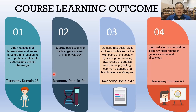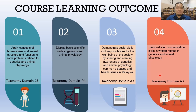The third course learning outcome is to demonstrate social skills and responsibility for the well-being of society by sharing and creating awareness of genetic and animal physiology common diseases and health issues in Malaysia. This is in taxonomy domain A3. The fourth course learning outcome is to demonstrate communication skills in written and oral forms related to genetics and animal physiology.